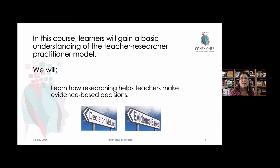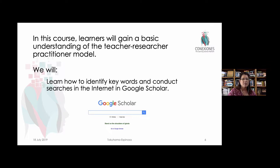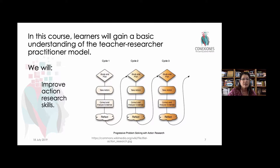In this course we have nine main objectives. First, we want you to learn how researching can help you make better evidence-based decisions, and to do that we want you to appreciate how asking the right kinds of questions can lead to better teaching outcomes, as well as learn how we can narrow down, identify, and use keywords to conduct better searches on Google Scholar to find evidence and up-to-date information. This means we're improving broader research skills and habituating ways of approaching problems in education in a way that you'll be able to use long after this course finishes.